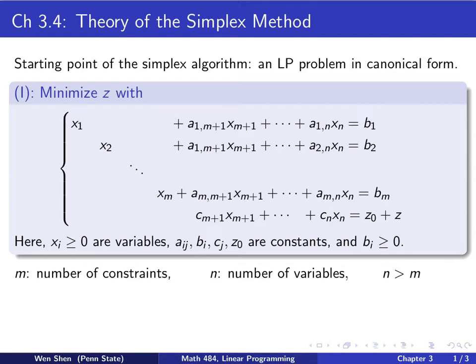The algorithm starts with an LP problem in canonical form. That's the starting point of the whole algorithm. We should remember what it means that a linear programming problem is in canonical form. It's in this box here. We call this problem I, and we'll refer to it as problem I later.